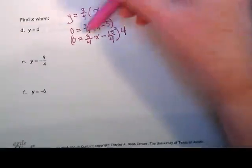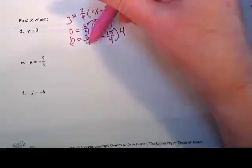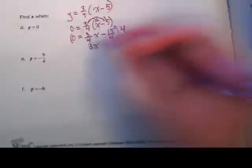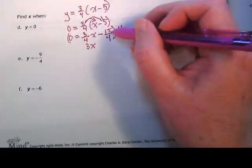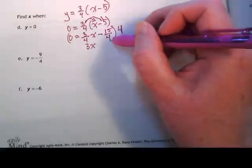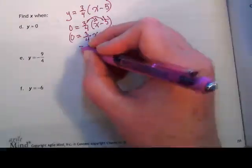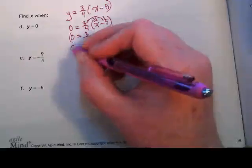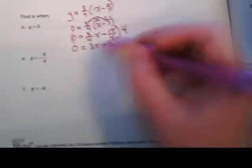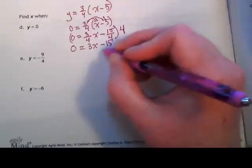So 4 times 3 is 12 and 12 divided by 4 gives us 3, so this would just be 3x. 4 times 15 is 60 and 60 divided by 4 goes back to 15, it's a negative 15. And 4 times 0 gives us 0.